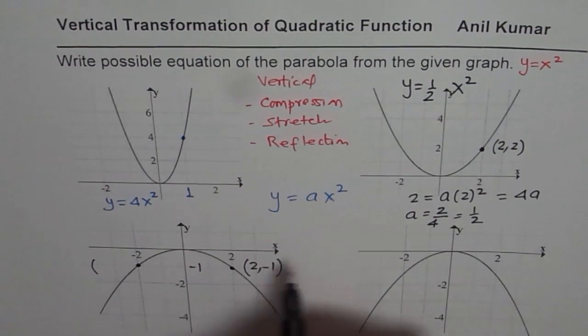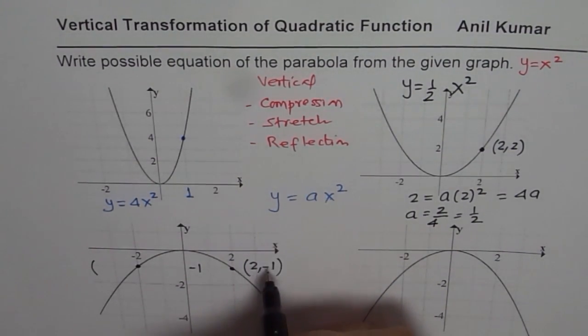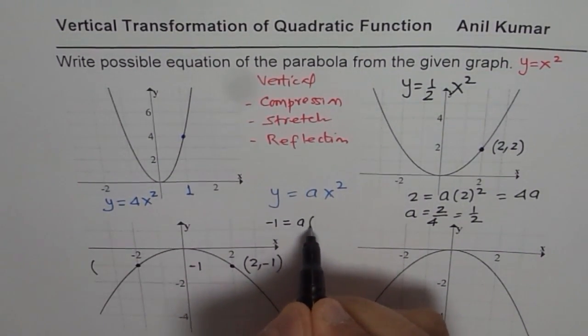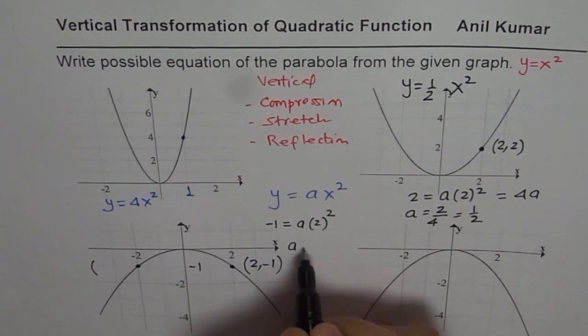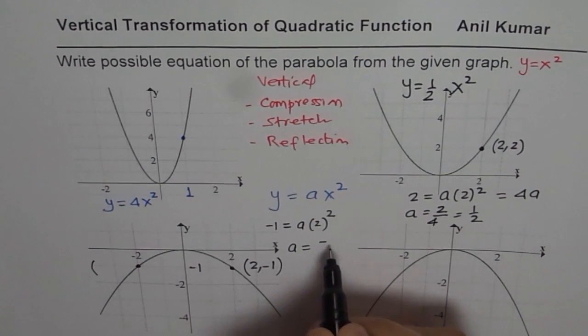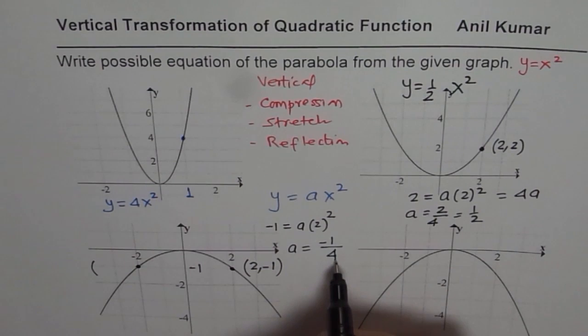Y is minus 1 equals to a times 2 square. Or, a is equals to minus 1 over 4.